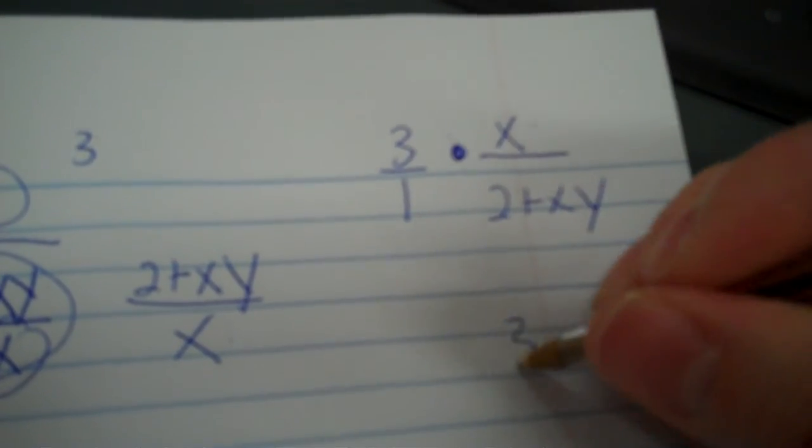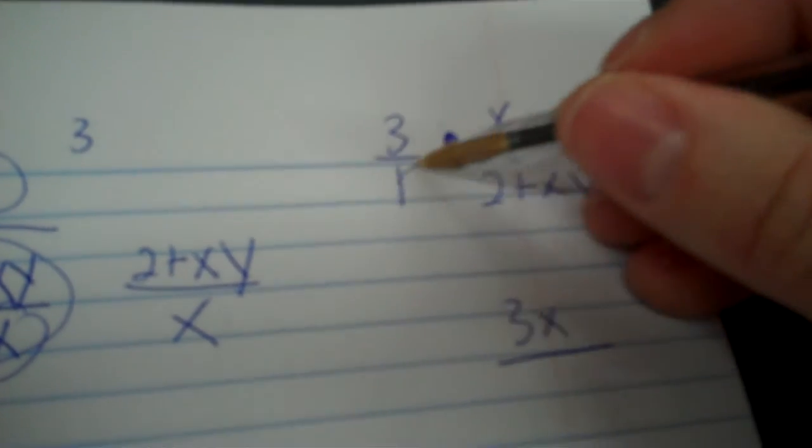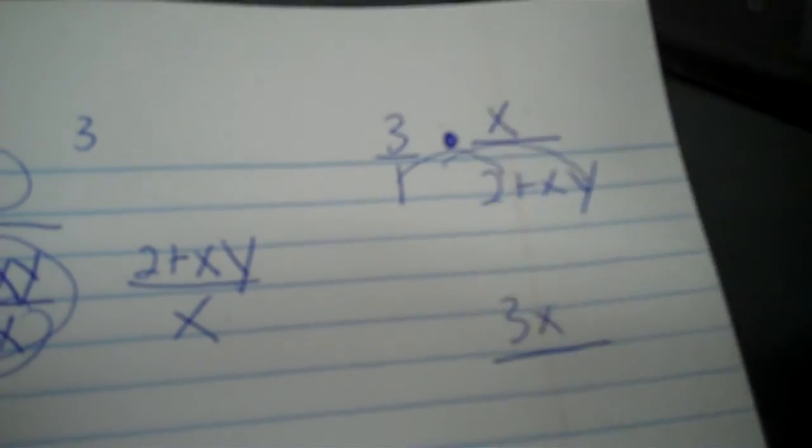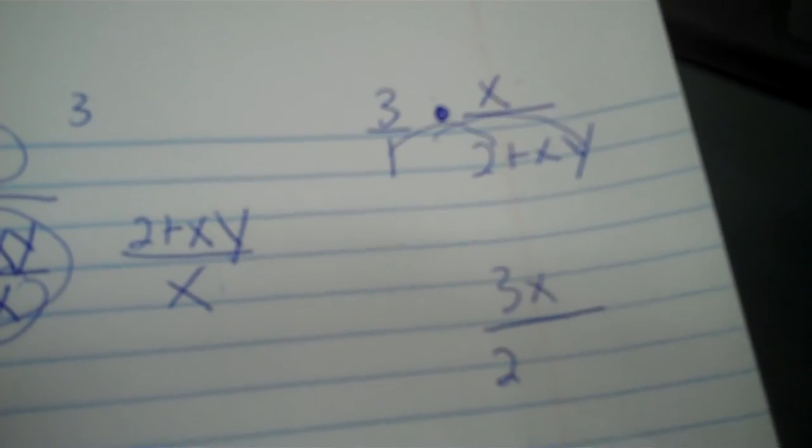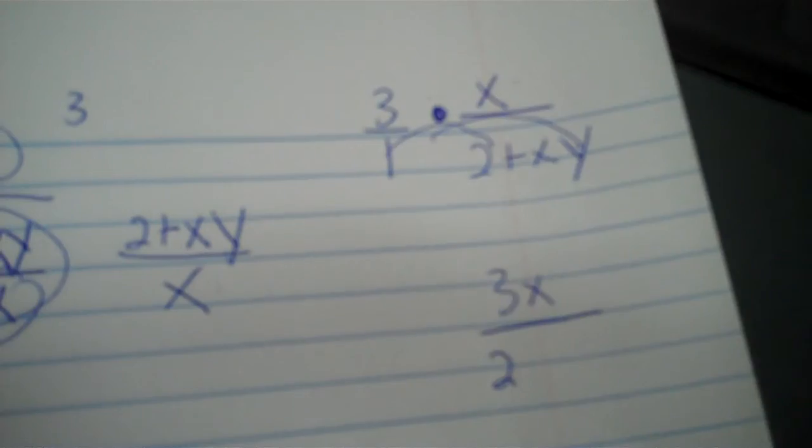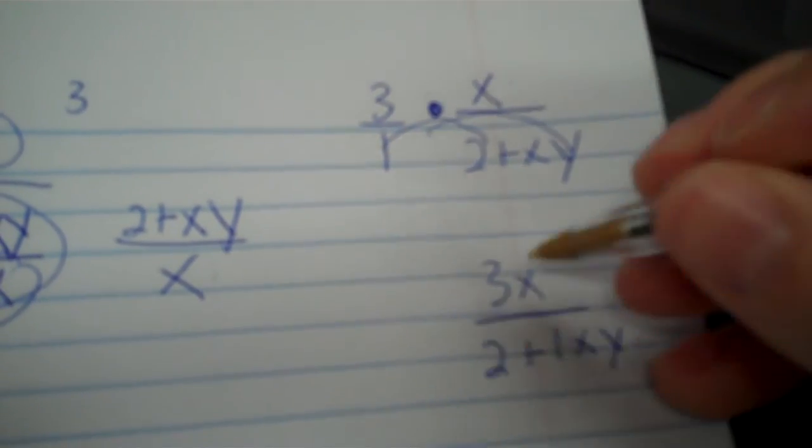So, three times x would just be three x. And then I'd just distribute my two. Two times two is, one times two is two. One times xy would be one xy.